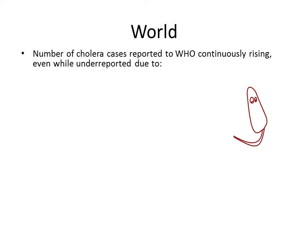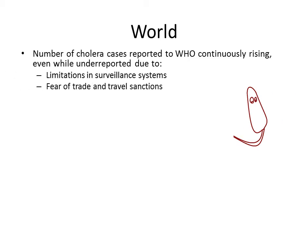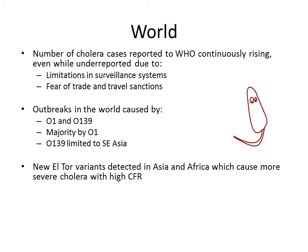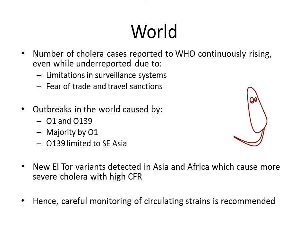The number of cholera cases has been rising in recent years, even while cases are underreported due to inadequate surveillance systems or fear of trade and travel sanctions. Outbreaks in the world are caused by O group 1 and O 139, with the majority by O group 1. O 139 is limited to South East Asia. New LTOR variants detected in Asia and Africa can cause more severe cholera with higher case fatality rates. Previously, LTOR variants were associated with milder cases, but recently higher virulence LTOR variants have been identified. Hence, careful monitoring of the causative strain is recommended.